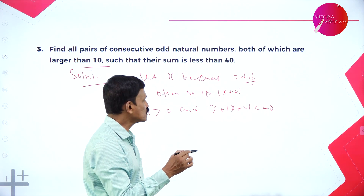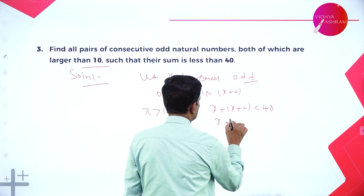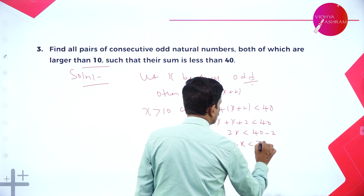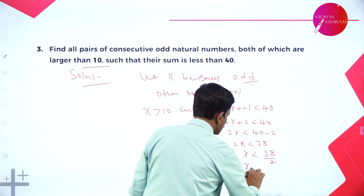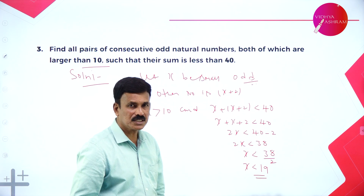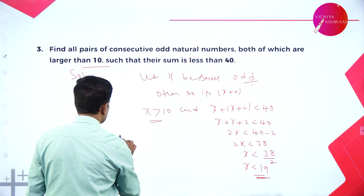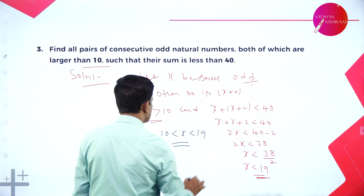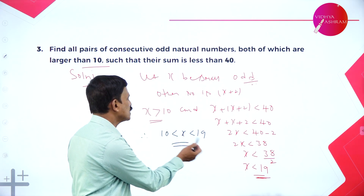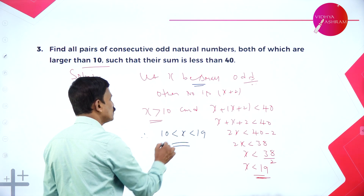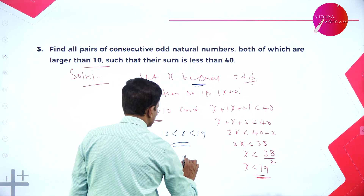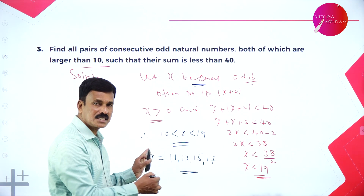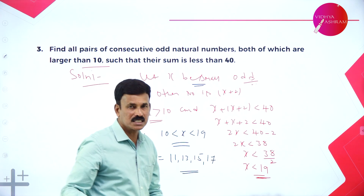Solving: 2x + 2 < 40, so 2x < 38, meaning x < 19. Combined with x > 10, we get 10 < x < 19. Since x is an odd natural number lying between 10 and 19, the values are x = 11, 13, 15, and 17.